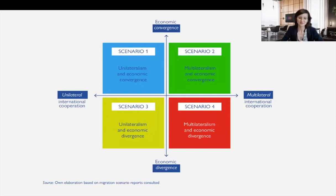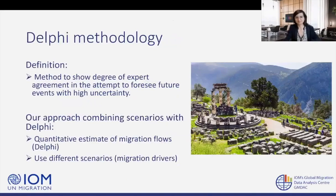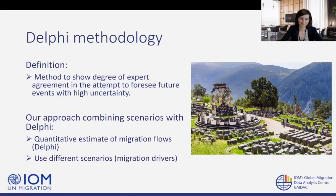Colleagues developed four scenarios based on storylines: the first on unilateralism and economic convergence; second on multilateralism and economic convergence; and so on. Those colors will come back when I present the results. These scenarios look at what if — what happens as a certain driver comes into play — and look at alternative futures. They are mutually exclusive, look at structural changes and consequences for migration. We combined that with the Delphi survey. Delphi surveys look at how to arrive at consensus among experts on numerical estimates on migration flows across several rounds. We combined quantitative estimates of migration flows with different scenarios on migration drivers and their likelihood.